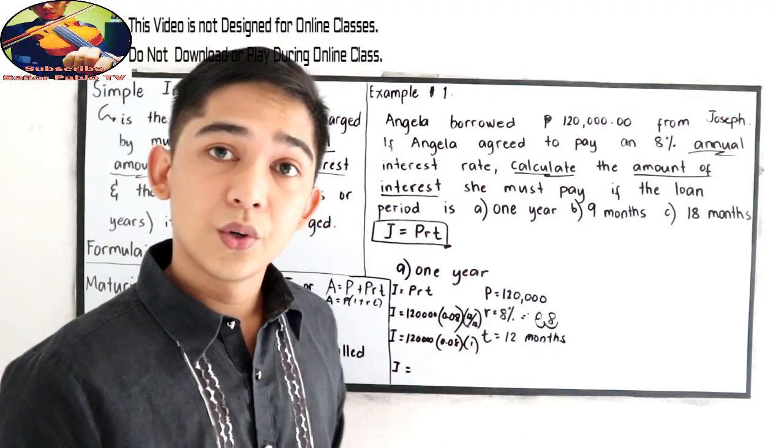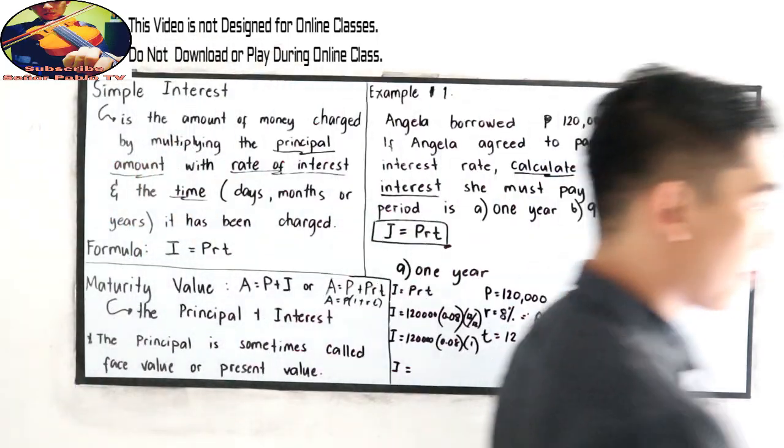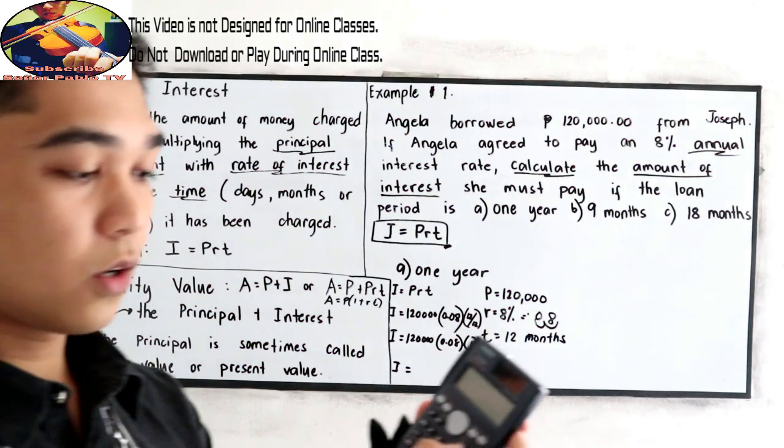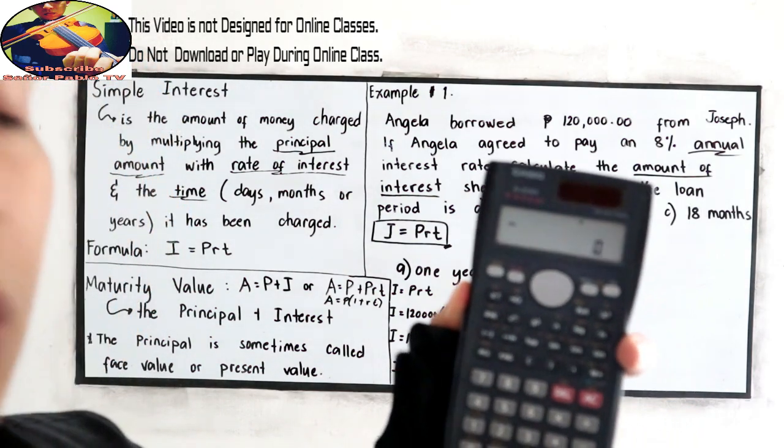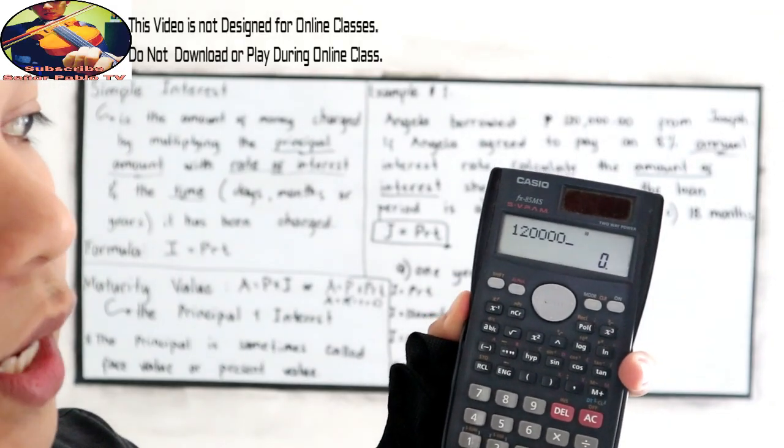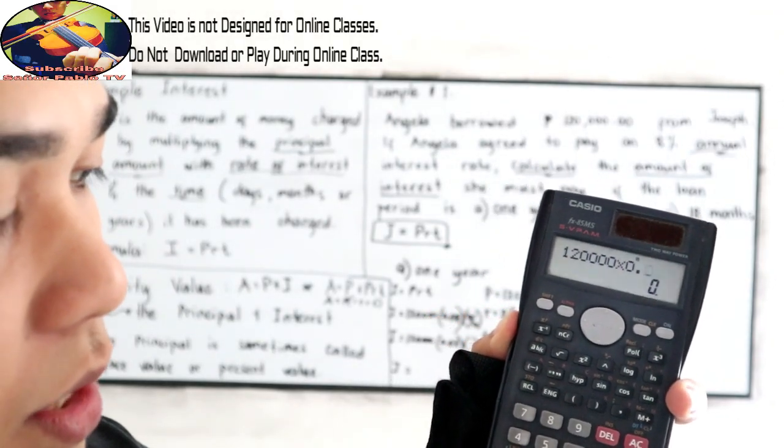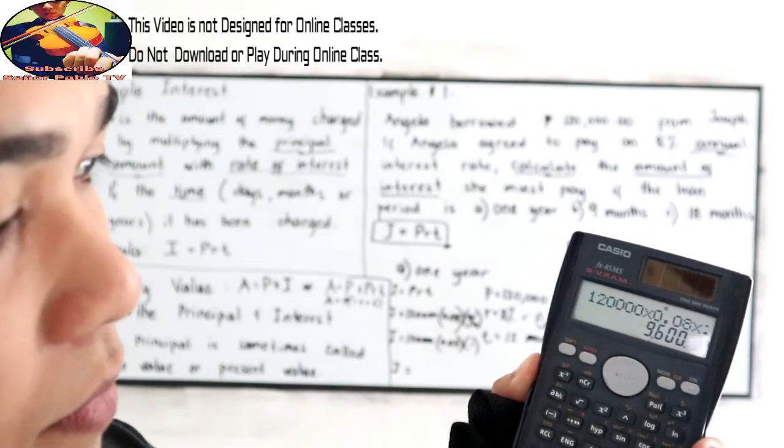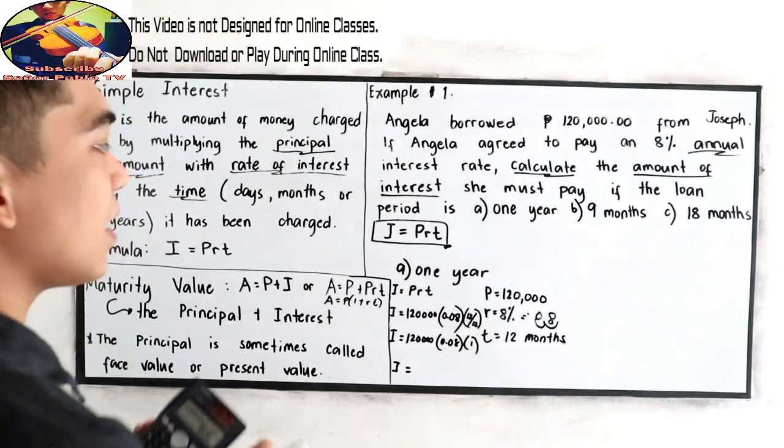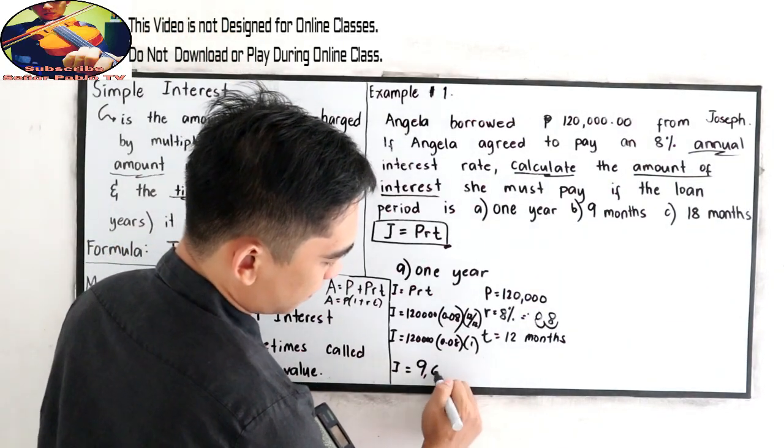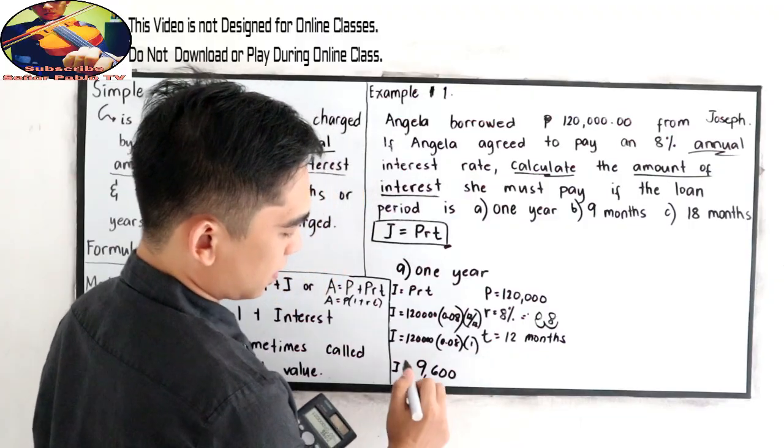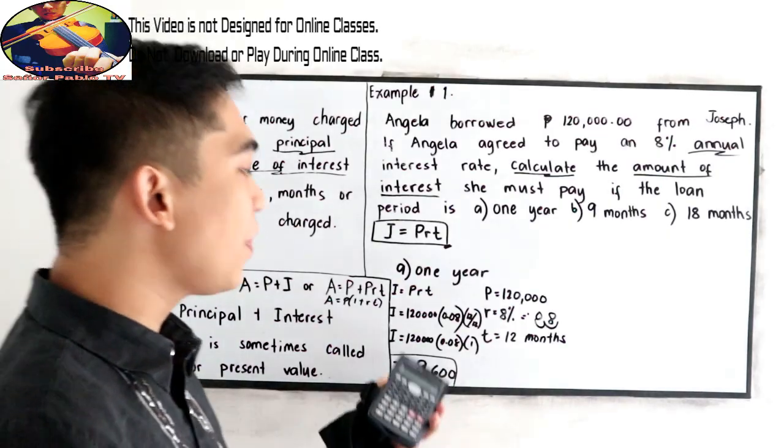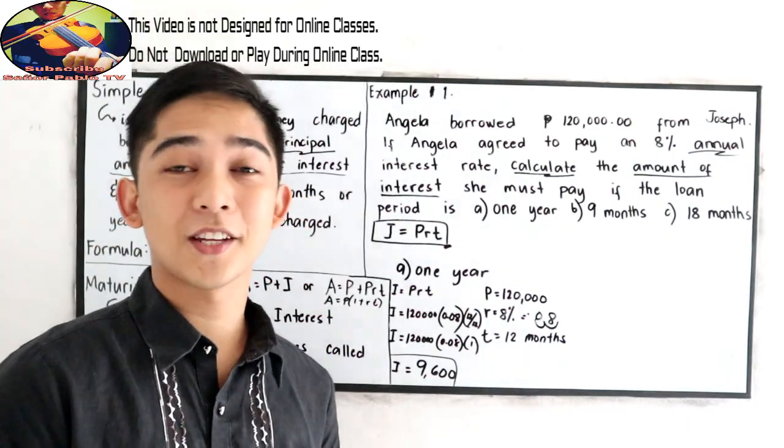So our interest now, you're just going to press in your calculator. So we have 120,000 times 0.08. That is 8% times 1. So 9,600. The interest after 1 year is 9,600.